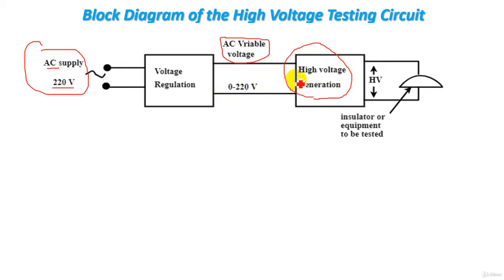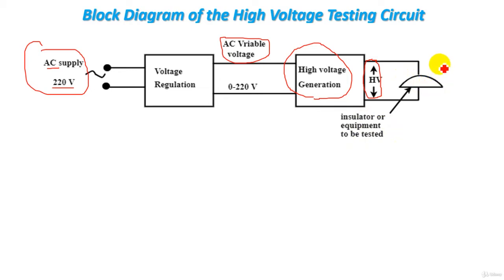The high voltage generation stage is used to produce a high voltage. This high voltage is applied to the insulator, specimen, or equipment to be tested, in order to determine the breakdown voltage and dielectric strength of the insulator and ensure its proper operation in the electric power system. This is the simple block diagram of the high voltage testing circuit.